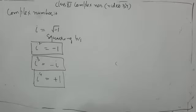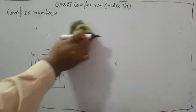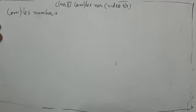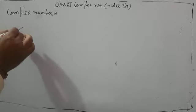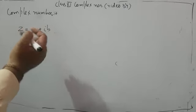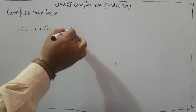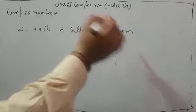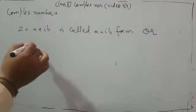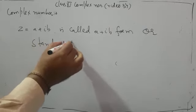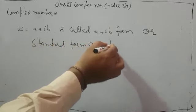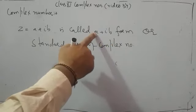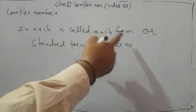When we write z = a + ib, this is also called the A plus IB form. It is also called the standard form — standard form of complex number. So wherever it says A plus IB form, it means this form where iota B is written.